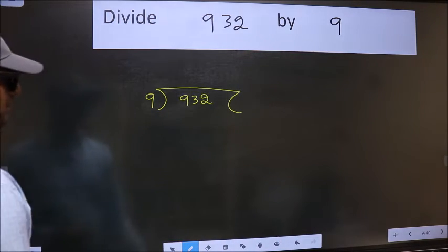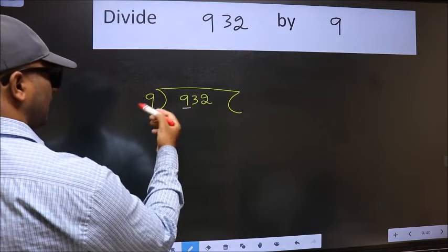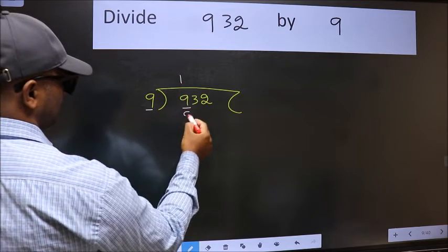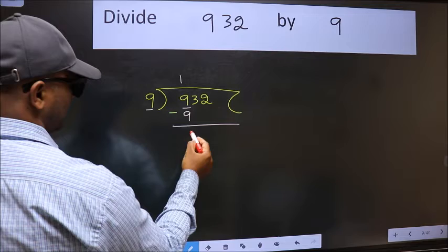Next. Here we have 9 and here 9. When do we get 9 in 9 table? 9 once 9. Now we should subtract. We get 0.